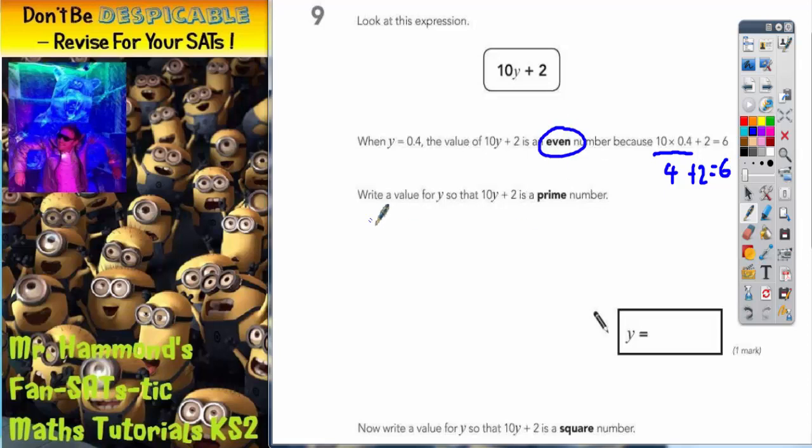It then says write a value for y so that 10y plus 2 is a prime number. Well first of all let's think about what the prime numbers could be. The prime numbers are 2, 3, 5, 7, 11, etc. We don't need to know anymore for the case of this question.